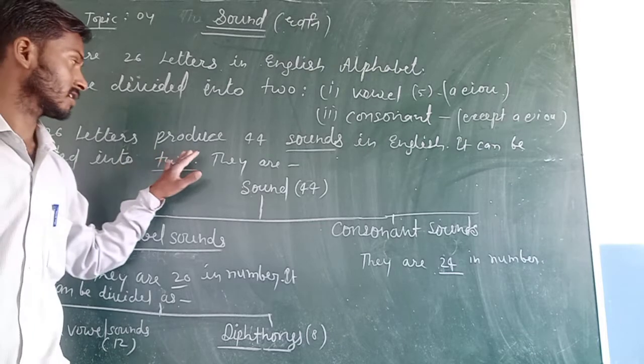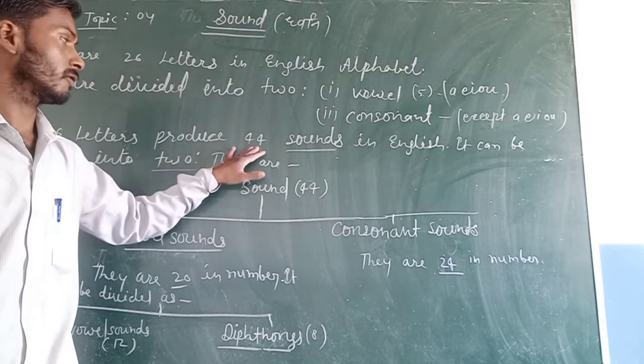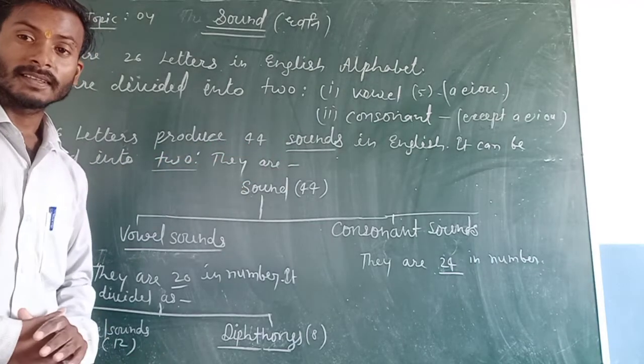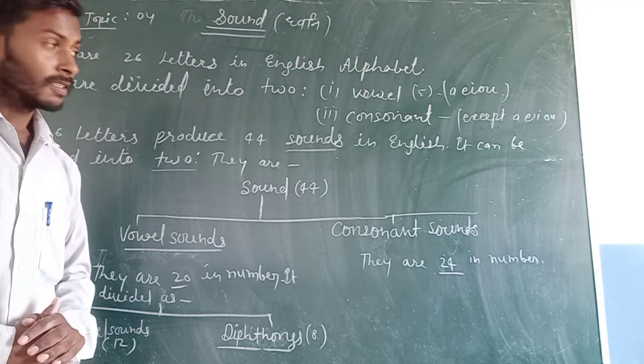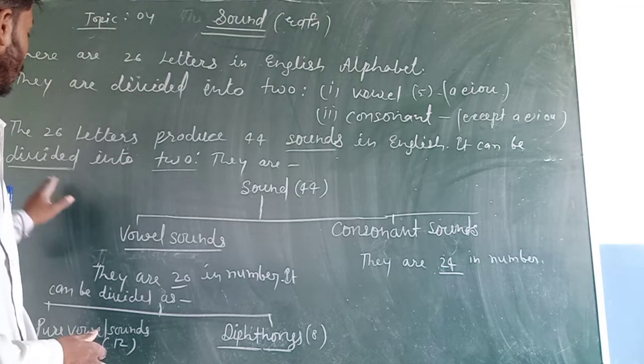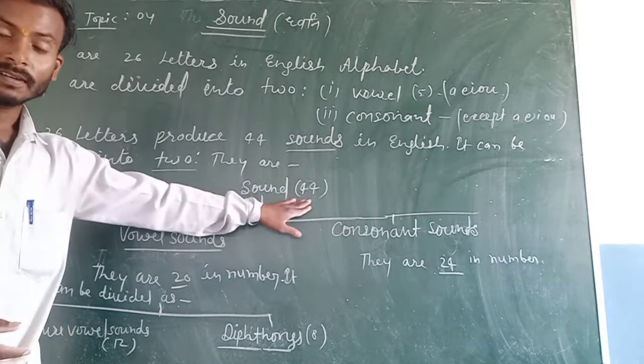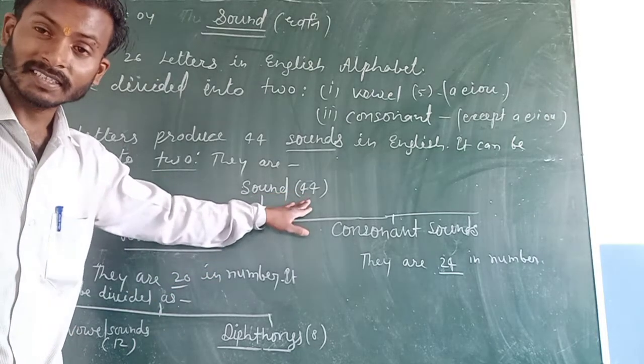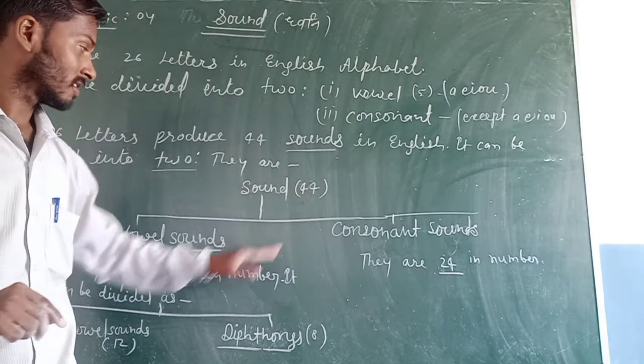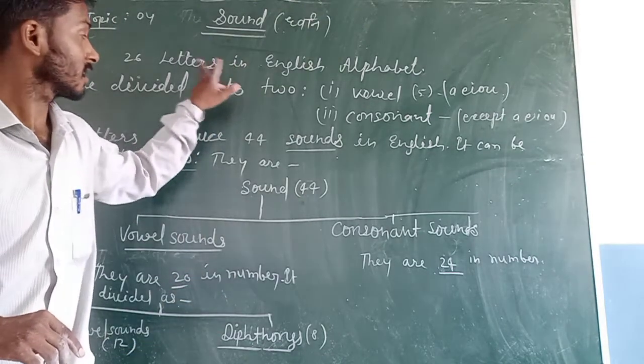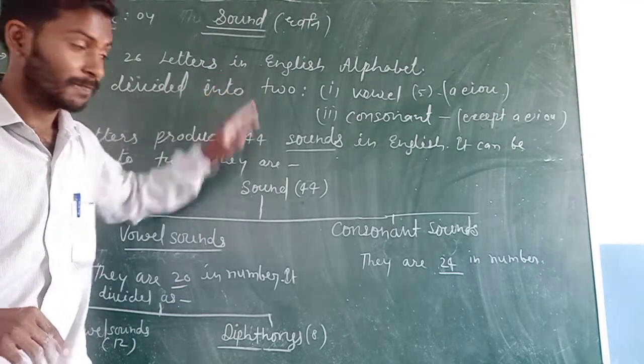The 26 letters produce 44 sounds in English. It can be divided into two. How many sounds are there in English? 44 sounds from 26 letters.